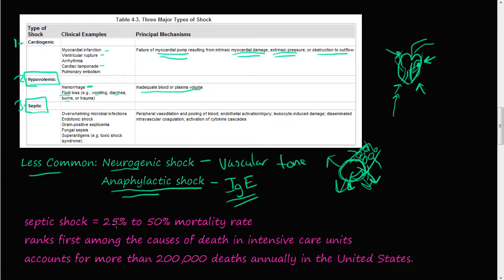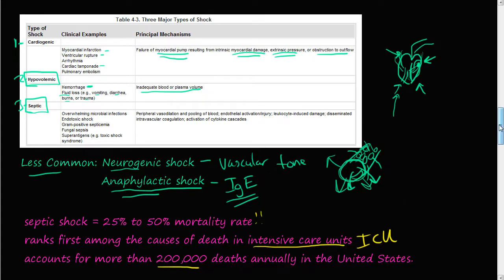Septic shock has a 25 to 50% mortality rate, so it's pretty hard to control. It ranks first among the causes of death in intensive care units. It's a big problem, accounting for more than 200,000 deaths annually in the U.S. These stats are taken from Robbins Basic Pathology, 8th edition.